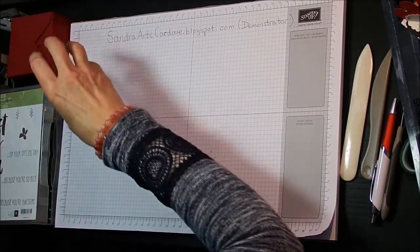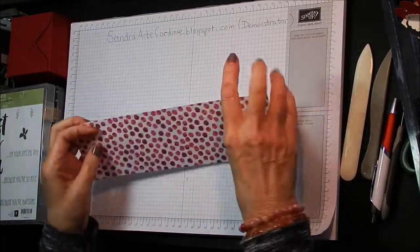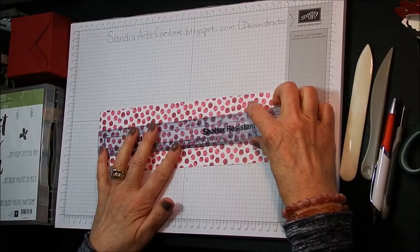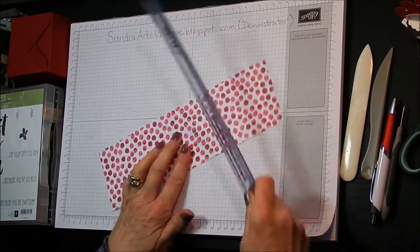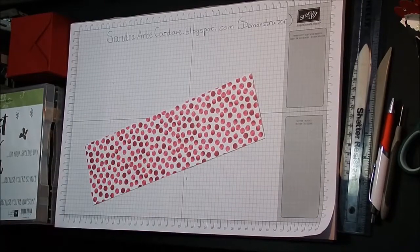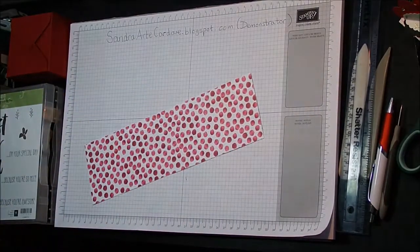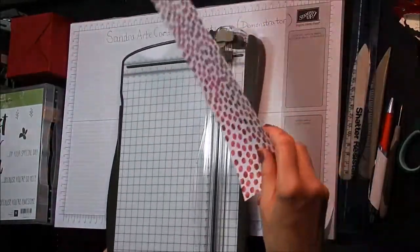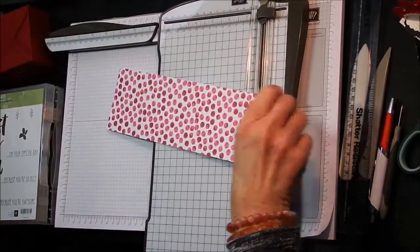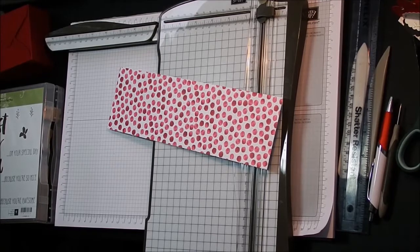So now we need to do our belly band. And I've got this designer series paper, as I said. This measures 11 inches by three and a quarter. Anyway, all the measurements will be on my blog. I'm going to just put some score lines on that. So I'm going to bring in my stamping trimmer to just score that. Let me just find out what I've done with my book that drives in all my score lines.